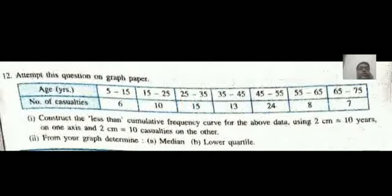Next, this is the last question for you. Here it is given, the grouped data. For plotting this graph, you have to use the graph paper, plot this, so that you can confirm. Data is given here, age, number of casualties, so 5 to 15 years, 6 casualties, 15 to 25 is 10, 25 to 35 is 15, 35 to 45 is 13, 45 to 55 is 24, 55 to 65 is 8, 65 to 75 is 7.